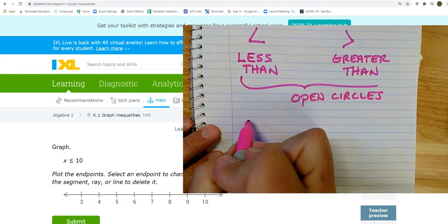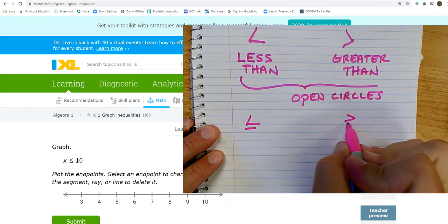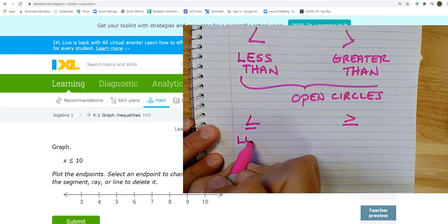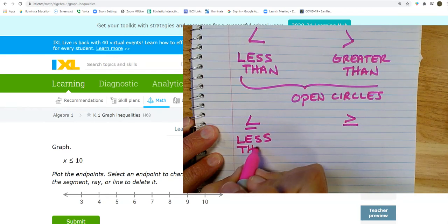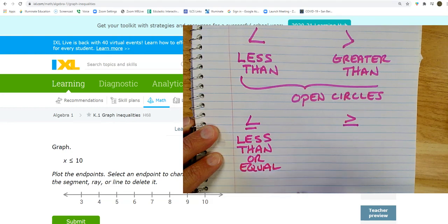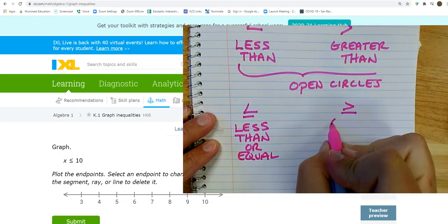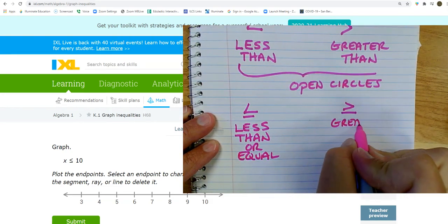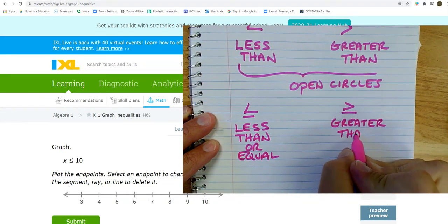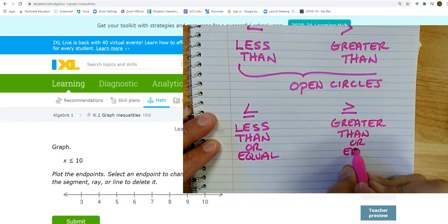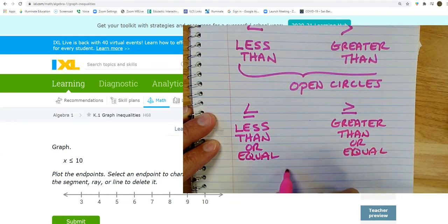And then we also have those two. This is less than or equal. And this is greater than or equal. And these are closed circles.